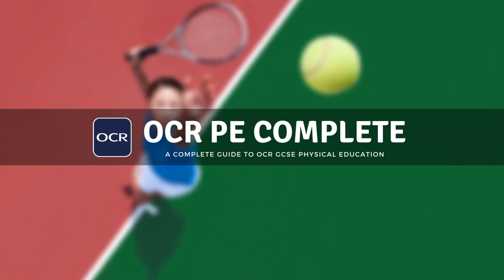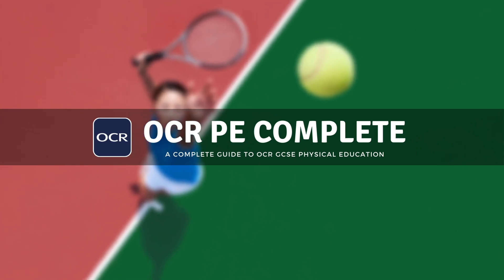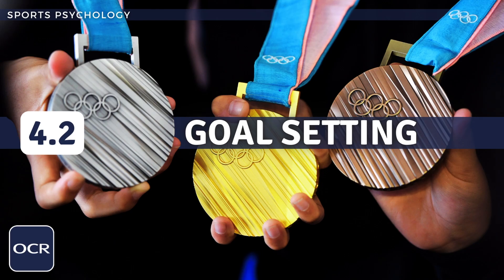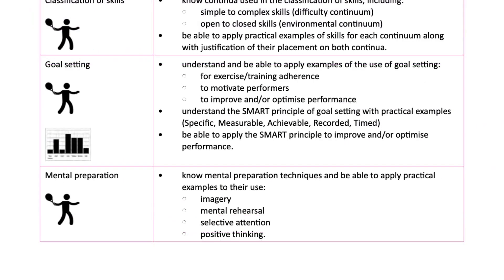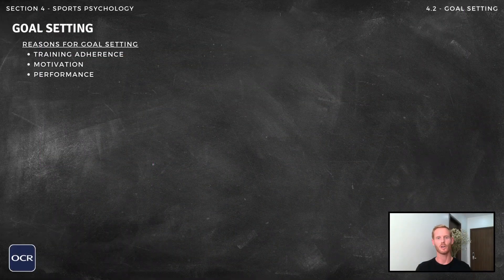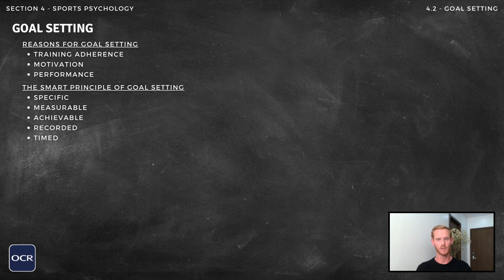Hello and welcome to another complete OCR GCSE PE lesson, where you'll learn absolutely everything you need to know on topic 4.2, goal setting. We'll be following the OCR syllabus exactly and will cover everything you need to know for your final exam. For topic 4.2, you need to know the different reasons why goal setting is used, the SMART principle of goal setting, and how to apply this principle to improve or optimise performance.